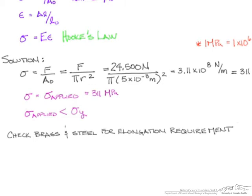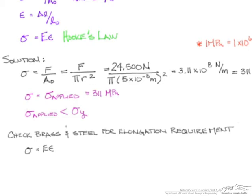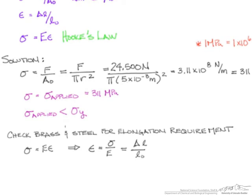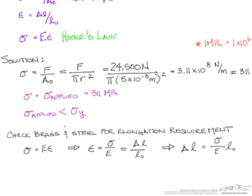we can solve for epsilon, and we also know that epsilon is equal to delta L over L0. As a reminder, delta L over L0 comes directly from the Engineering Strain equation. We can now solve for delta L, and this now gives us an equation to be able to determine what the maximum elongation is for each material.